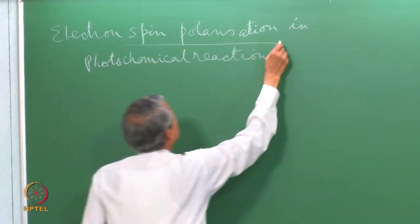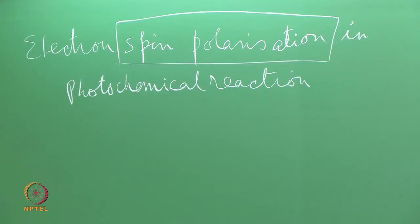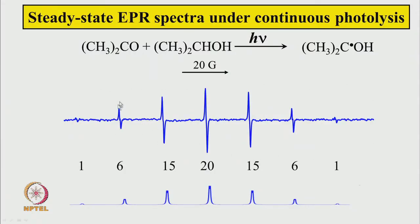Before understanding the meaning of this term, let us see some examples. Here the steady-state EPR spectrum of a particular system is shown. We have acetone mixed with isopropanol as solvent and we shine UV light continuously. We record the EPR spectrum the way normally we do — this is the steady-state EPR spectrum recorded under continuous photolysis. The spectra looks like this and from the intensities of the various hyperfine lines we can attribute it to a specific radical.